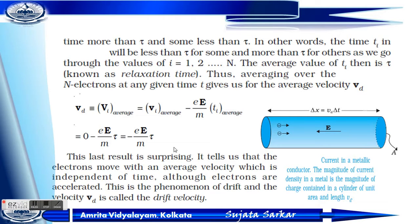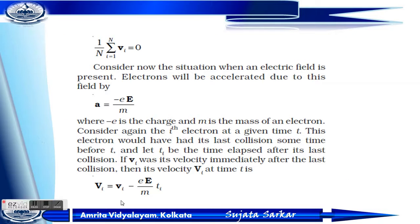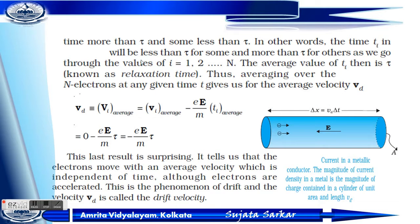Now, what is the average velocity? Taking the average of the velocity equation: the average of vi (after last collision) tends to zero since it is random, and we replace ti with tau (the average relaxation time). Therefore, the drift velocity vd equals −(eE/m) × tau. This means electrons move with an average velocity that is independent of time. This phenomenon is known as drift velocity, denoted as vd.